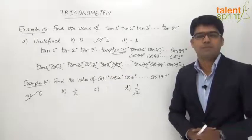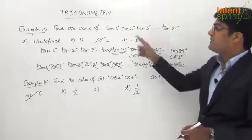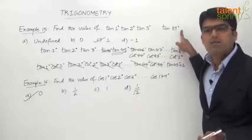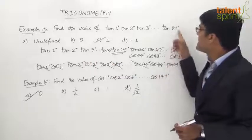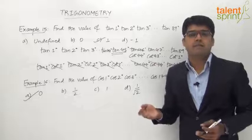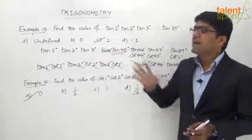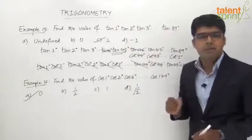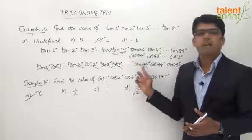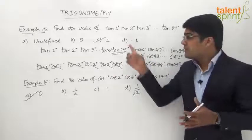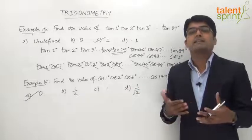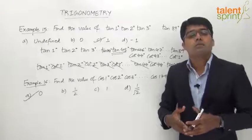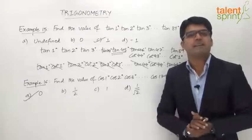Similarly, in the previous example, if an extra term tan 90° had been included, we would not need any process — we could simply say that since tan 90° is undefined, the complete series is undefined, and the answer would be option A: undefined. But since tan 90° was not given and each term has a real value, we had to simplify step by step. The key strategy for these series questions is: first check if any term equals 0 (making the whole product 0); if not, convert ratios into forms that allow cancellation to arrive at the final answer.